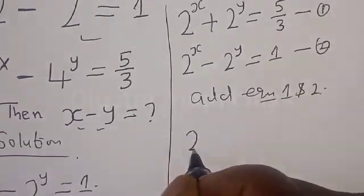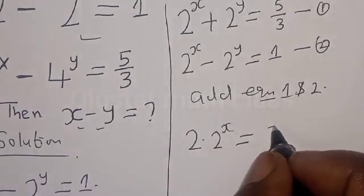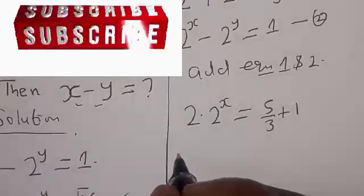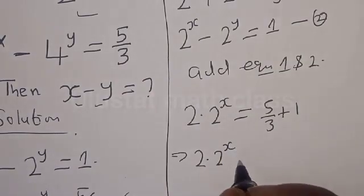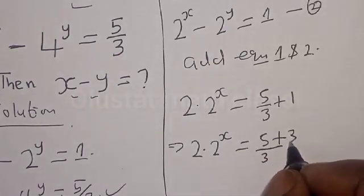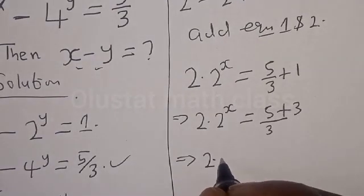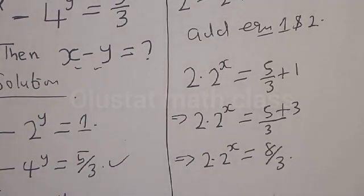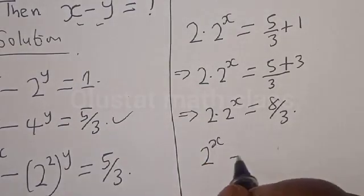Adding equation 1 and equation 2, we have 2 multiplied by 2 raised to the power x, which equals 5 divided by 3 plus 1. This implies 2 multiplied by 2 raised to the power x equals 5 divided by 3 plus 3 divided by 3, which is 8 divided by 3. Now let's divide both sides by 2. We have 2 raised to the power x equal to what?